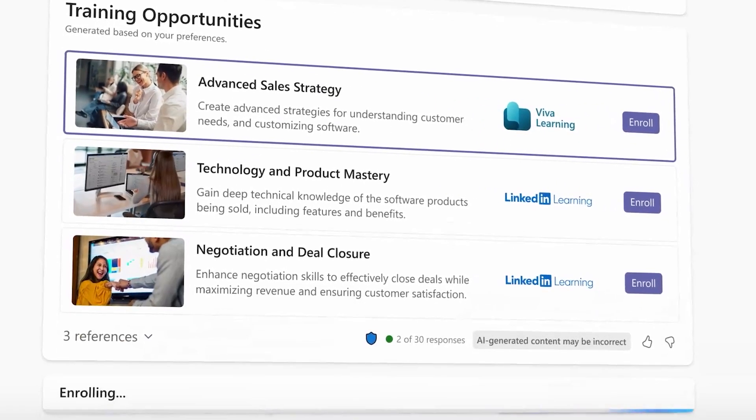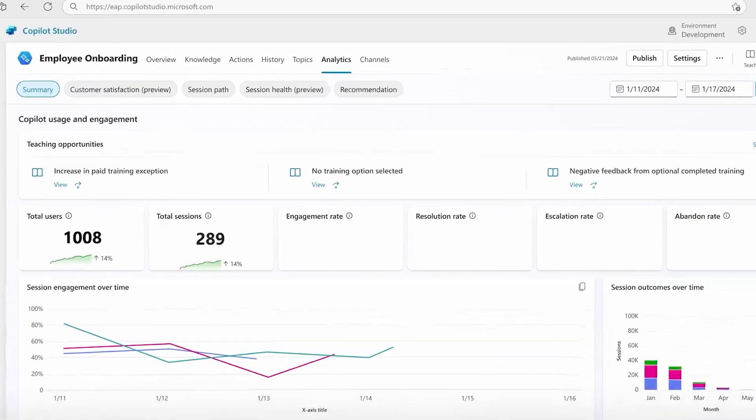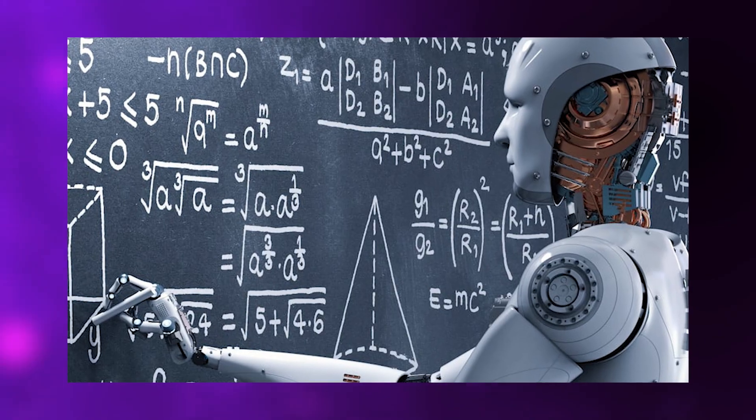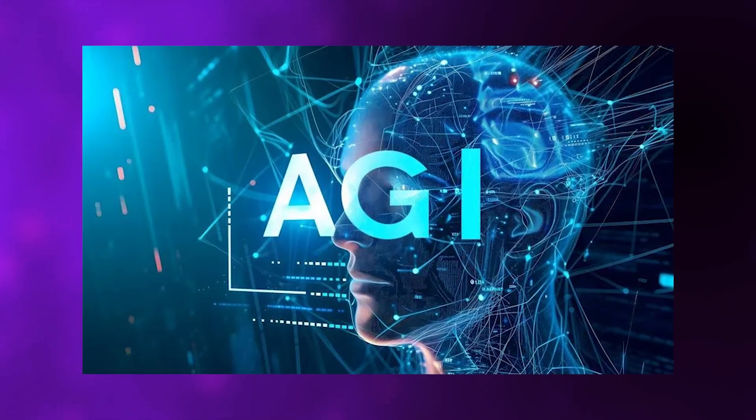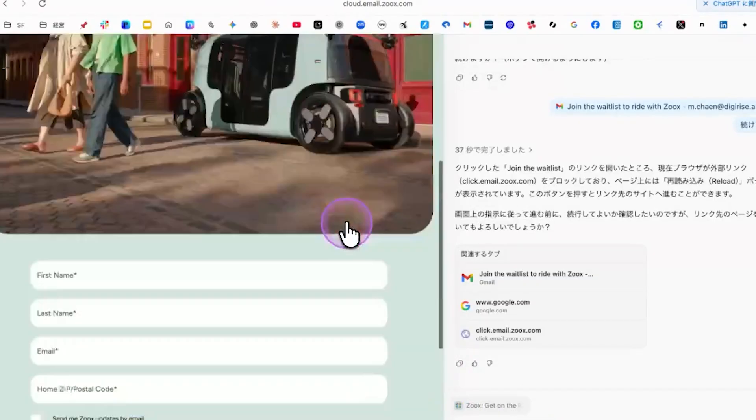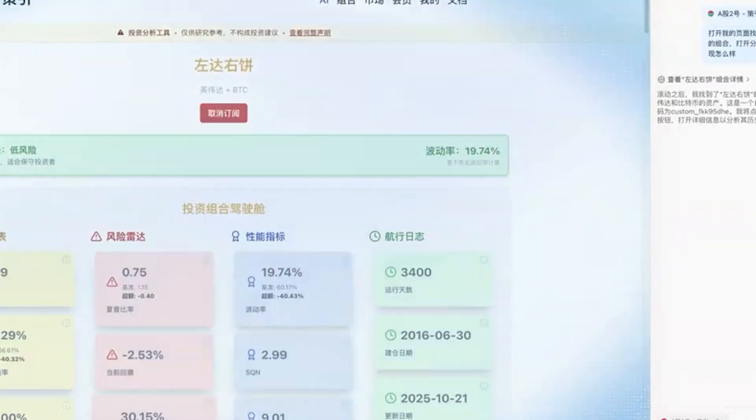The economic and social implications are profound. AI systems that can continuously learn and improve could accelerate scientific research, enhance educational experiences, and provide increasingly sophisticated assistance across every field of human endeavor. They could serve as persistent collaborators, building understanding and capability over months and years rather than being limited to single interactions.